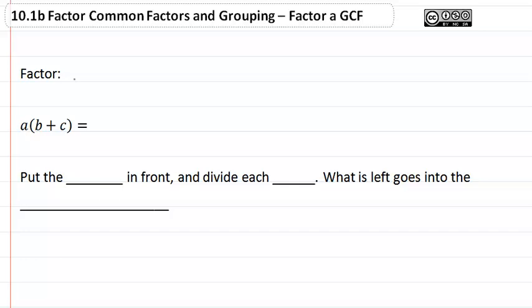When we factor the GCF, we want to write as a product. In other words, we want it to look like this here, a plus b plus c. This started out as something that looked like this, ab plus ac.